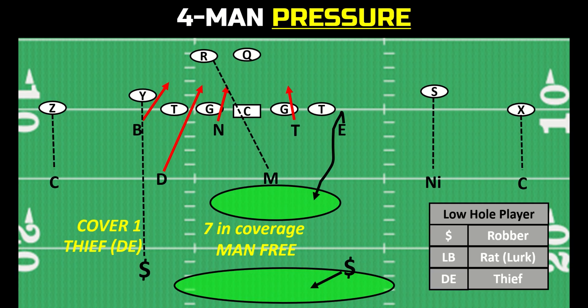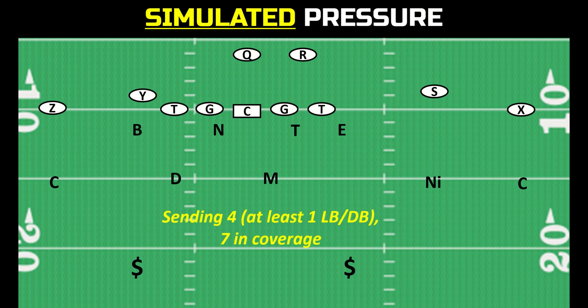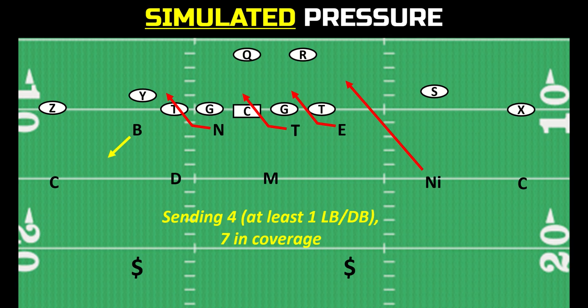That leads us to the simulated pressure category. A simulated pressure is when you are still sending four, but one of them is a linebacker or a defensive back — it is called a simulated pressure because a pressure by itself is a five-man pressure. A simulated pressure simulates a five-man pressure but really only sends four defenders against the quarterback. So a player from the second or third level, like the nickel, is blitzing, but only three defensive linemen are rushing, and one of the defensive linemen is dropping in coverage. It feels like a pressure to the offense, but it's only four.